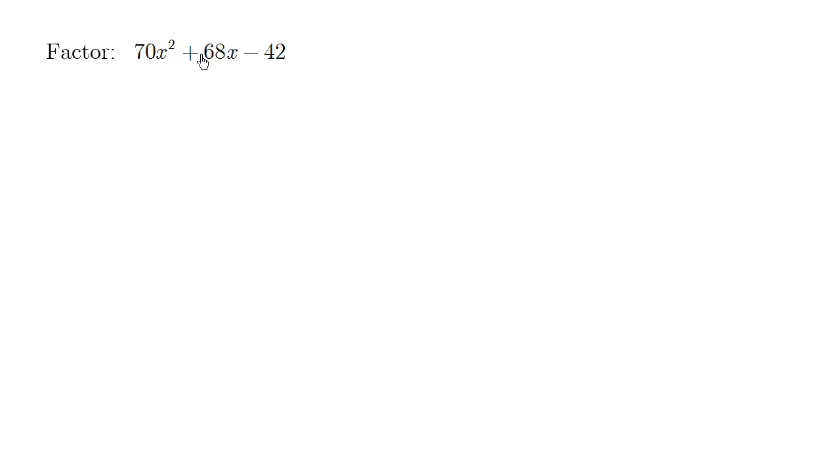So let's see, what can we divide by to pull something out here? We can divide by 2. So we get 2 times 35x² plus 68 divided by 2 is 34x, and then negative 42 divided by 2 is 21.